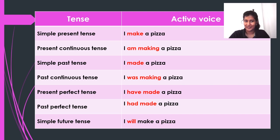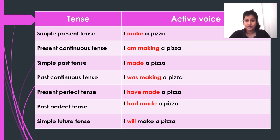The last one in this slide is simple future tense, which is used to talk about things that haven't happened yet — actions that will begin and end in the future. In simple future tense: 'I will make a pizza.' As you can see, the subject 'I' and the object 'a pizza' remain the same in every sentence, but the verb changes: make, am making, made, was making, have made, had made, will make. So the verb is different when the tense is different.